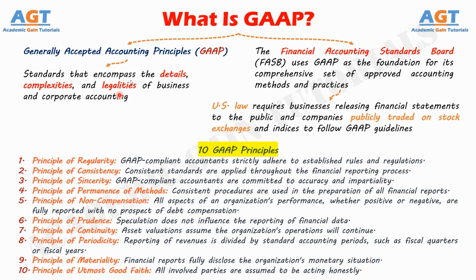GAAP compliance makes the financial reporting process transparent and standardizes assumptions, terminology, definitions, and methods. External parties can easily compare financial statements issued by GAAP-compliant entities and safely assume consistency, which allows for quick and accurate cross-company comparisons. Because GAAP standards deliver transparency and continuity, they enable investors and stakeholders to make sound, evidence-based decisions. The consistency of GAAP compliance also allows companies to more easily evaluate strategic business options.